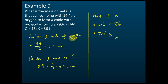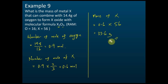First we find the number of moles of oxygen because we have its mass. From the ratio, we find the number of moles of X. From the number of moles, we find the mass. You need to be very clear about these questions. These are the advanced calculation questions — or advanced numerical problems — in this chapter, and they are considered the hardest questions in SPM chemistry.